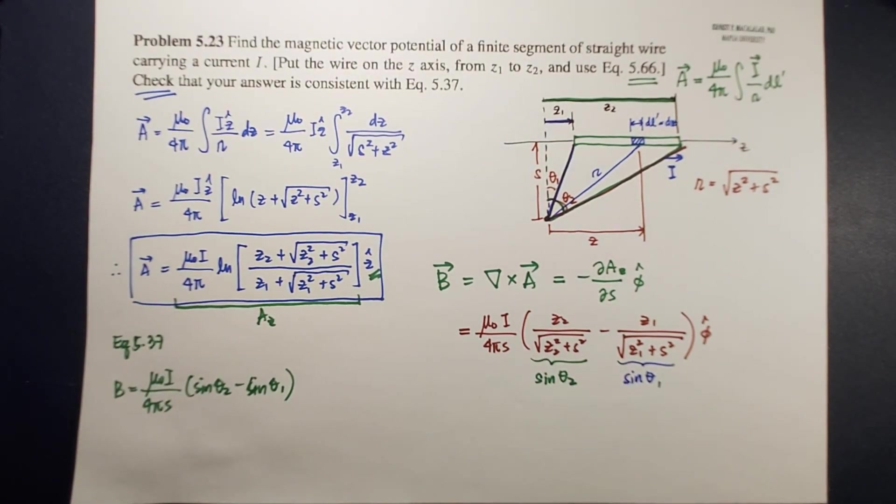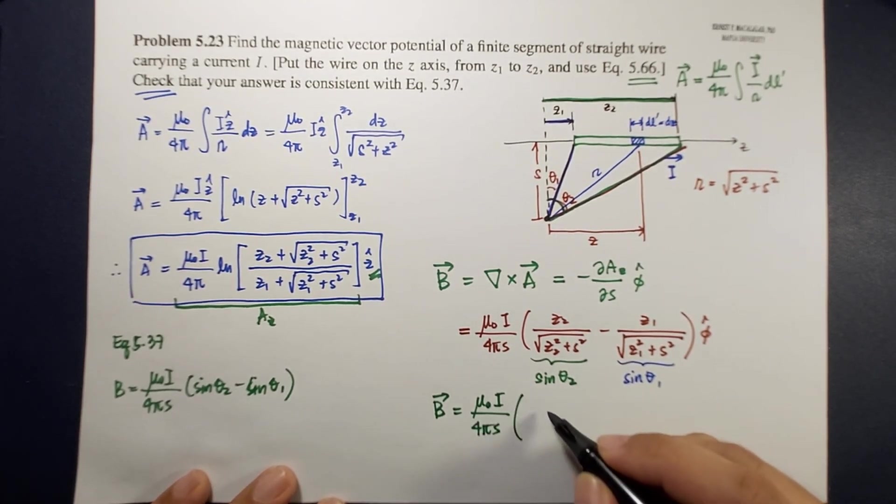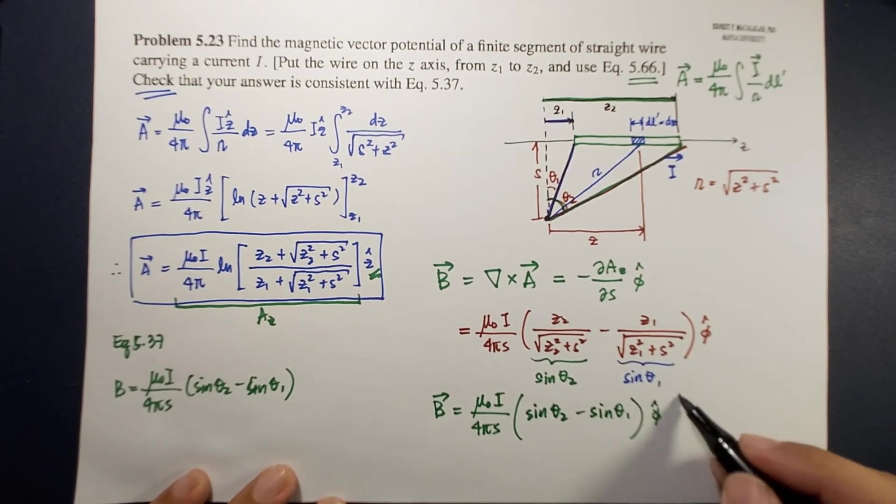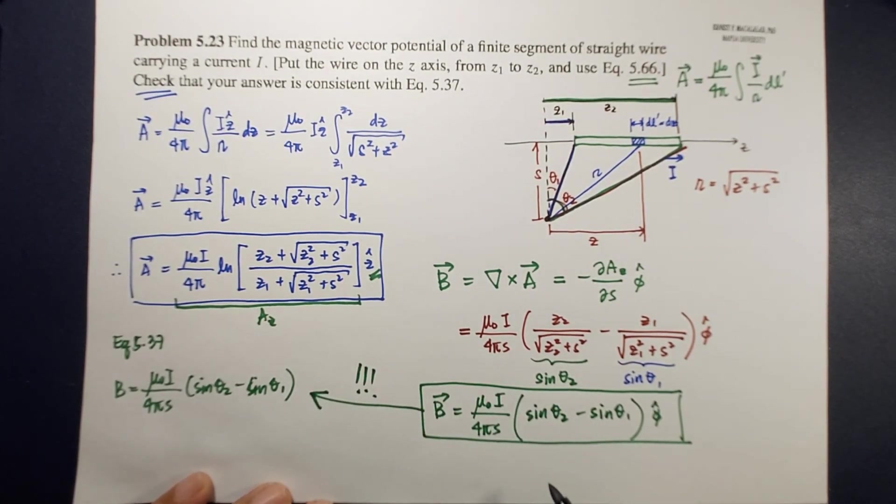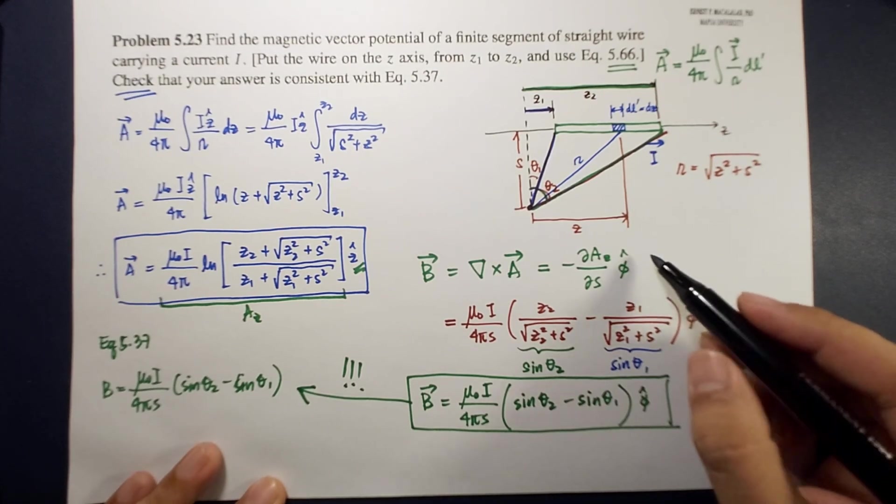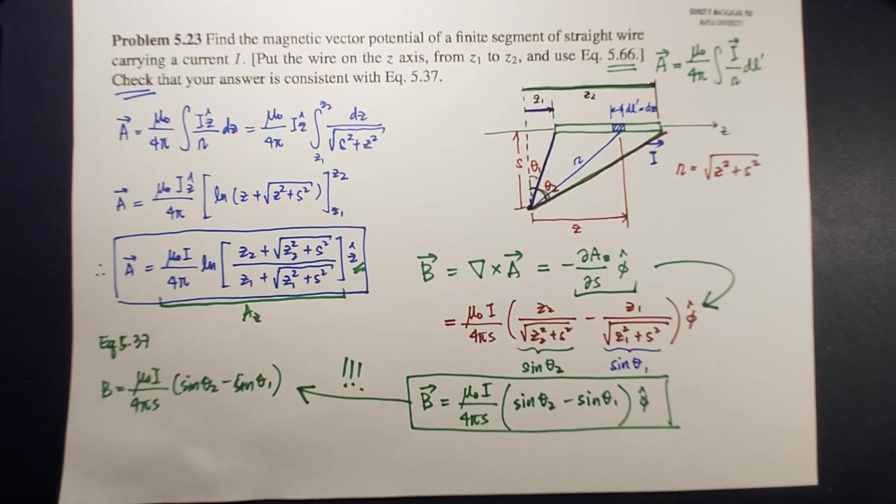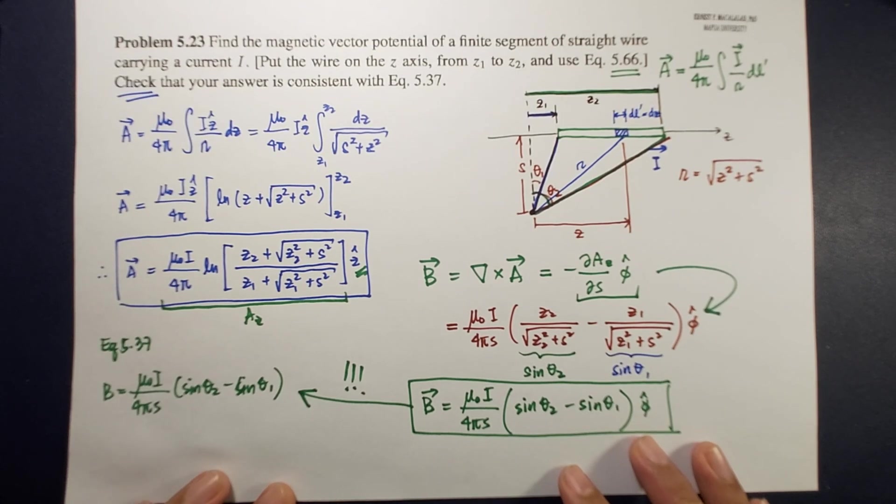Which gives us the final form B equals mu naught i divided by 4 pi s times sine theta 2 minus sine theta 1 times phi, which is exactly this equation. Amazing right, very easy. So I hope you were able to calculate this simple partial derivative to derive this expression. So this ends our solution to problem 5.23. I hope you learned something today and I'll see you guys in the next video. Bye-bye bye.